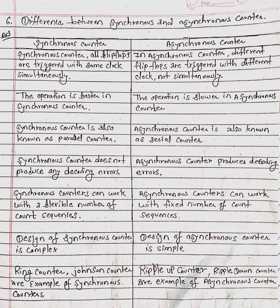Synchronous counter does not produce any decoding errors, while asynchronous counter produces decoding errors. Synchronous counters can work with a flexible number of count sequences, whereas asynchronous counters can work with a fixed number of count sequences. Design of synchronous counter is complex; design of asynchronous counter is simple.